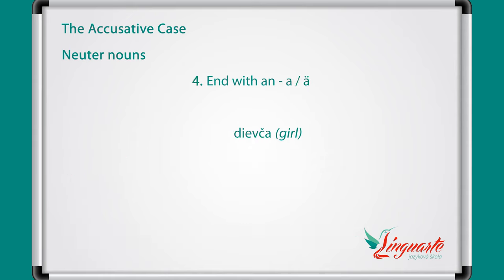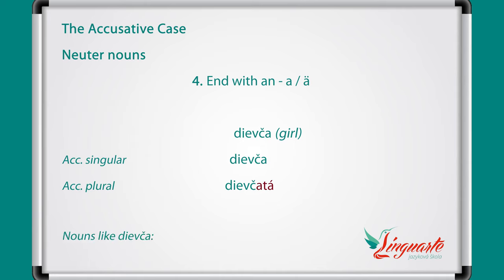Finally, the neutral nouns with ending in a or ä like dievča have these accusatives: dievča in singular and dievčatá or dievčence in the plural form. Nouns like dievča are dieťa, zviera, kura, žriebe.